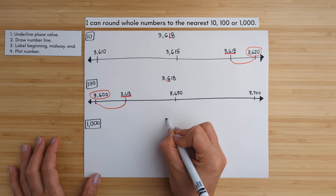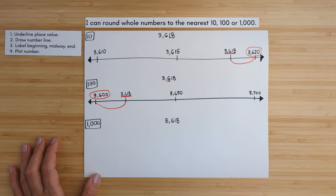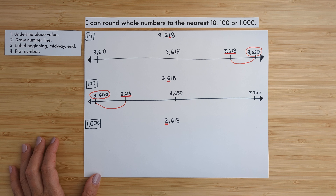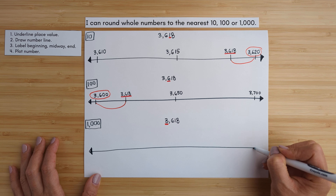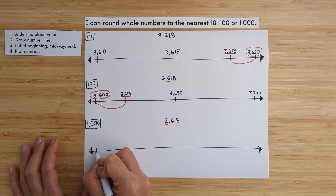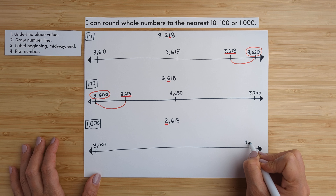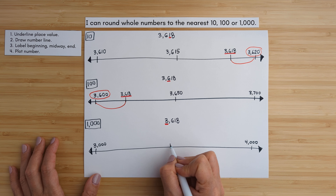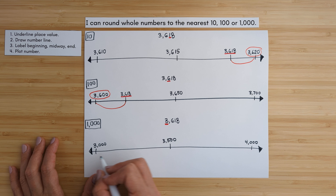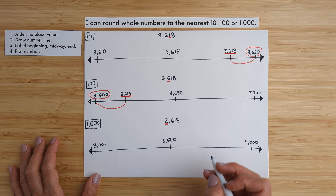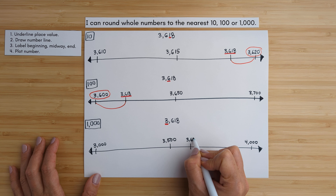Let's do this one more time — this time rounding to the nearest thousand. Same number. We underline the thousands place value, which is the three. We draw a number line. The beginning number is 3,000 — the three stays the same. One more than three is four, so the end is 4,000. Halfway between those two is 3,500. Then we plot 3,618, which is definitely on this side — probably right about here.